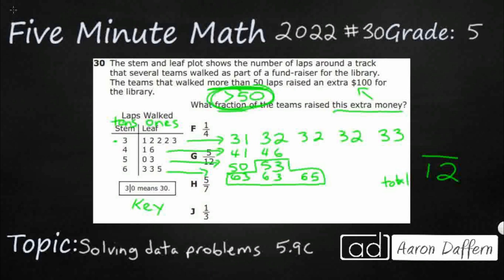53, 63, 63, and 65. Those are the teams that walked more than 50 laps. So there's four of them.